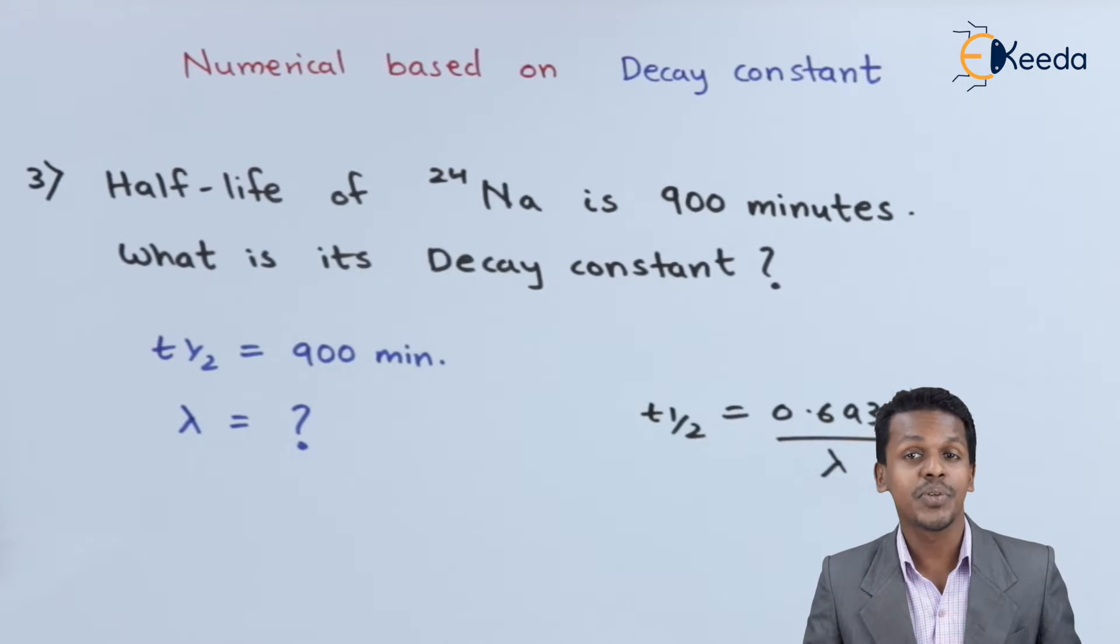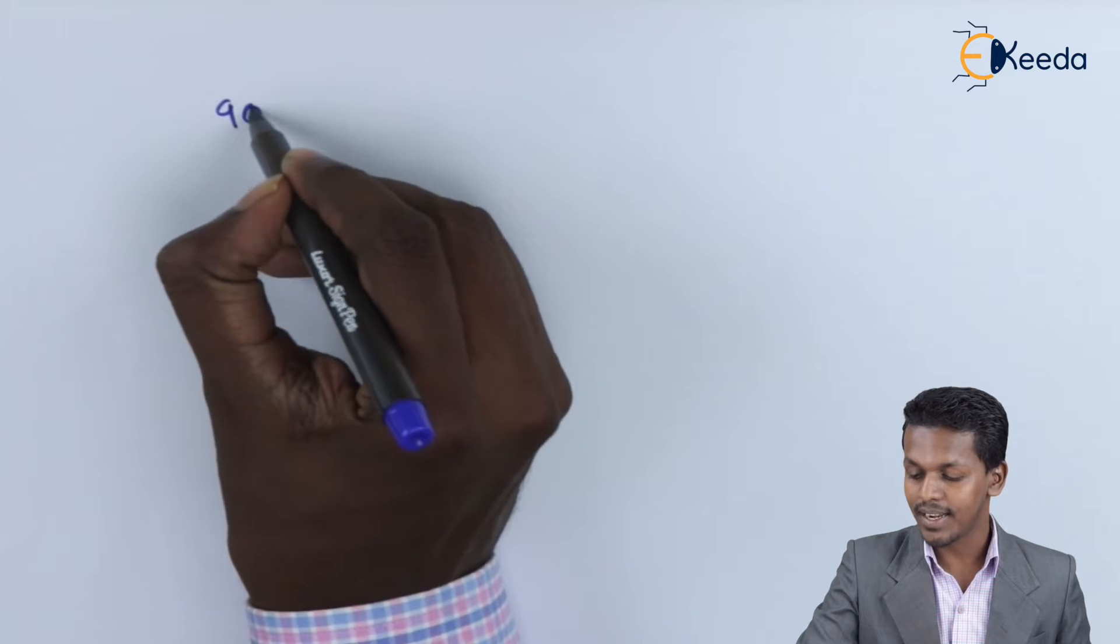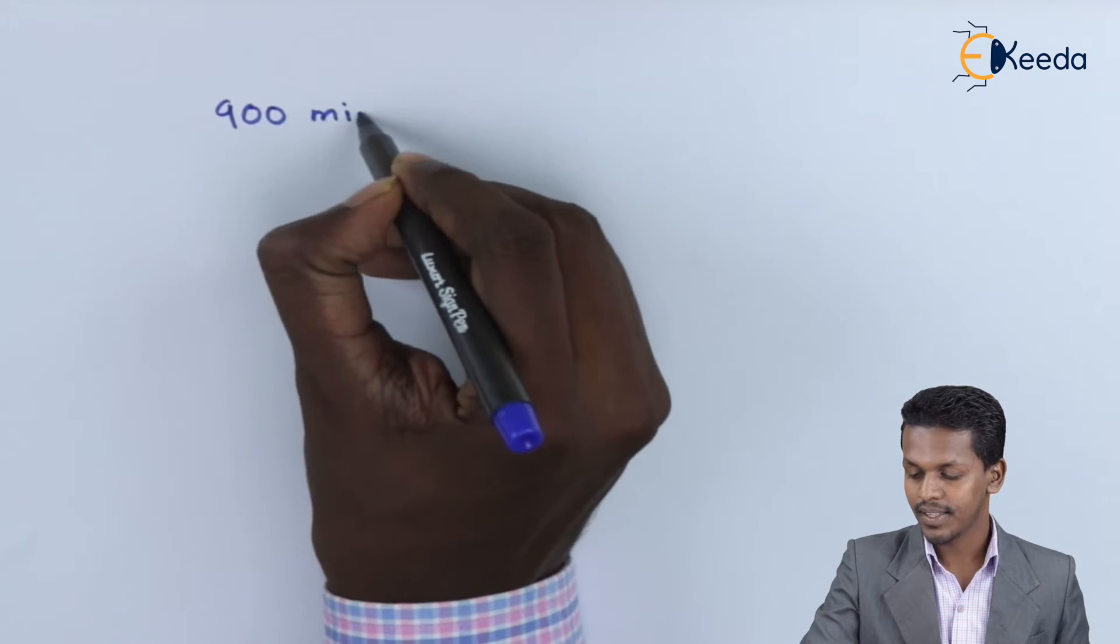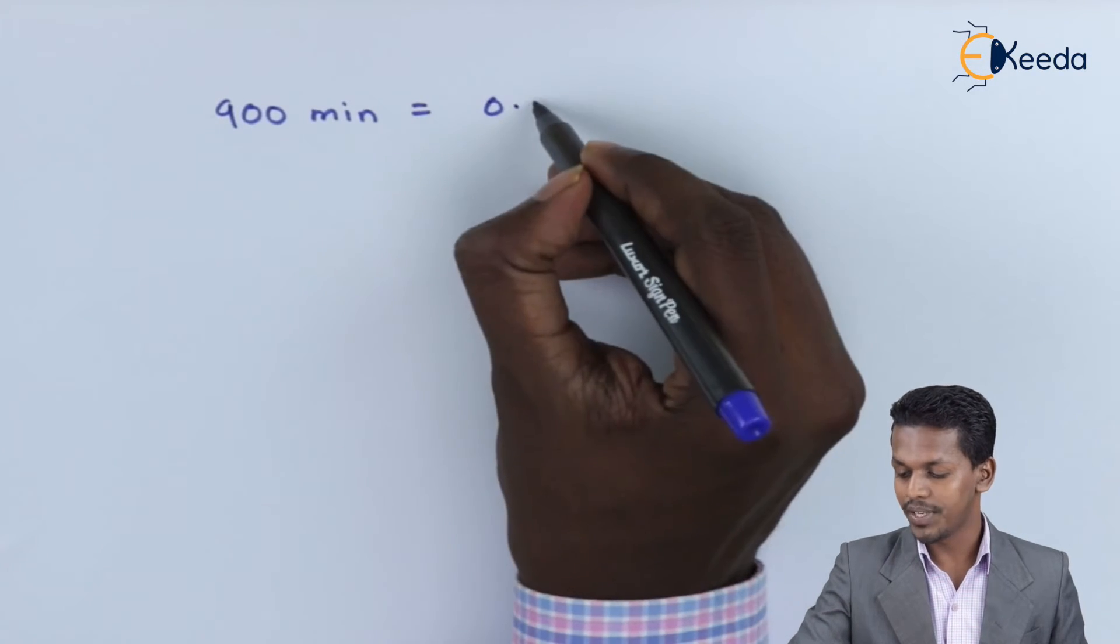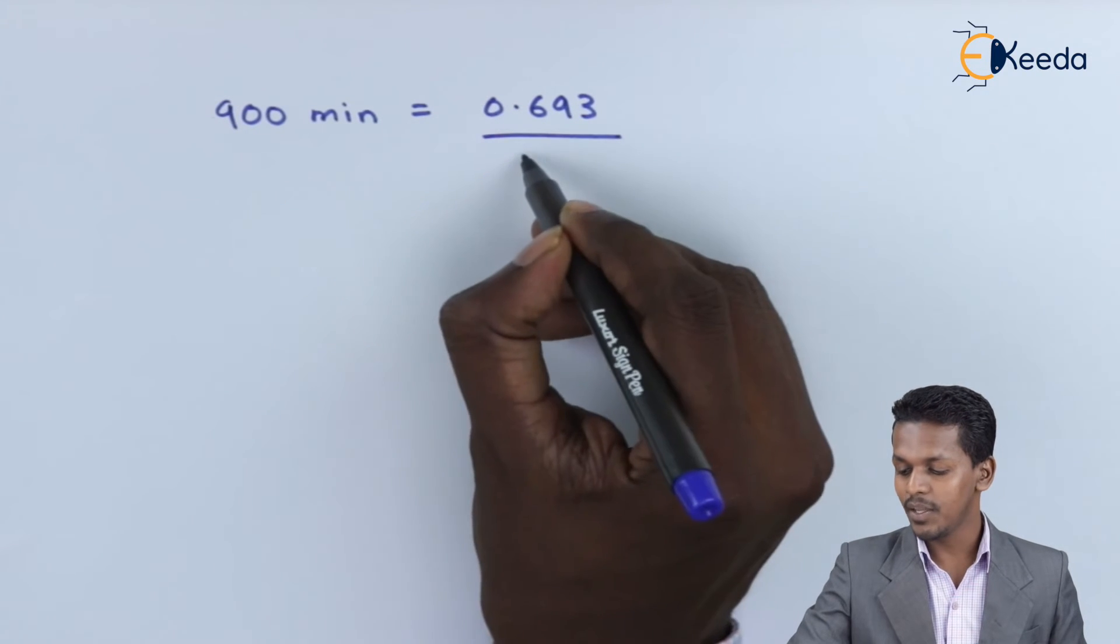Let us substitute the values and see what answer we get. For the T½ value, we have 900 minutes, and 0.693 is a constant value we already know.